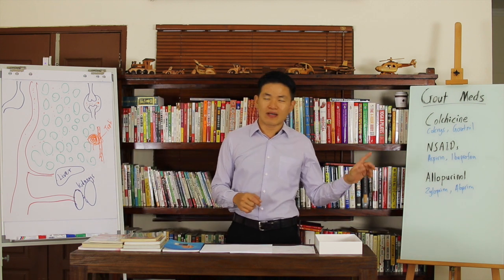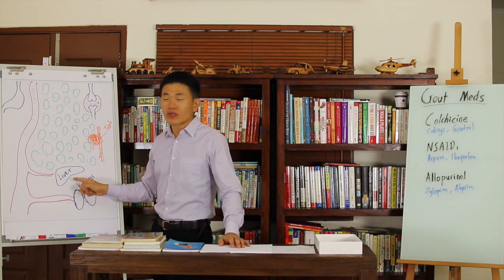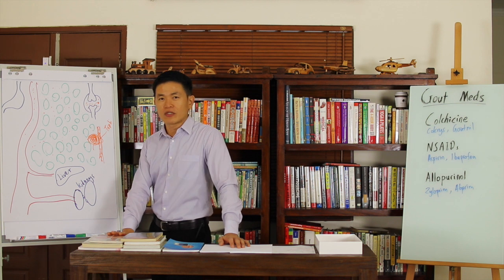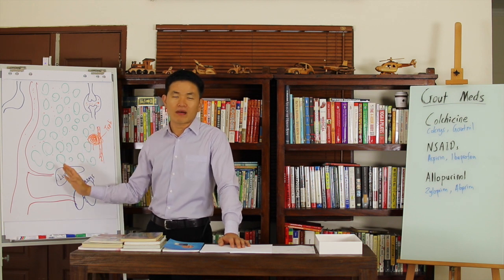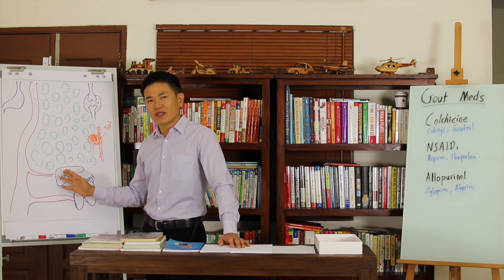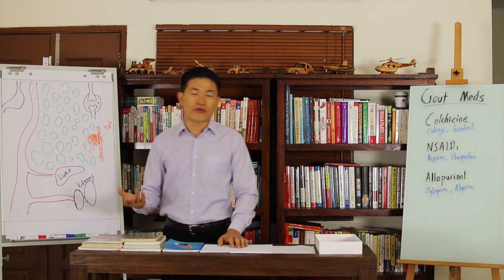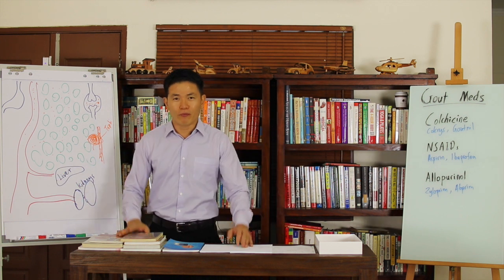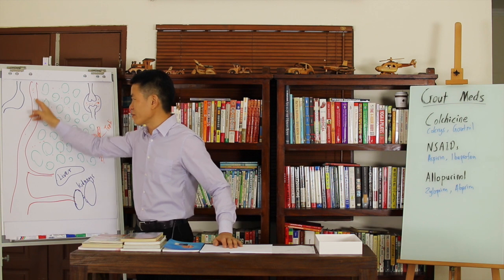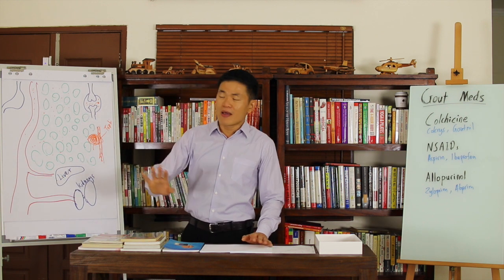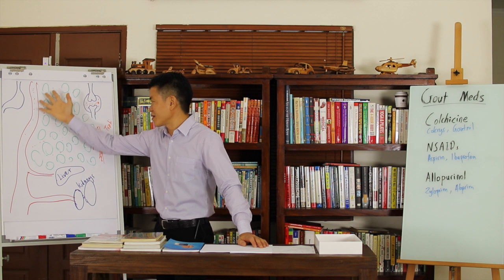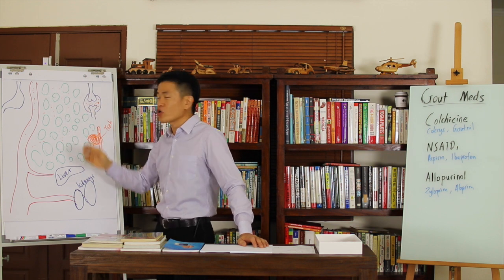What does allopurinol do is, it goes to the liver and it blocks this process. So by preventing the breaking down of purine, which means it reduces the production of uric acid into the bloodstream. With that, they lower down the uric acid in the blood, but it doesn't lower down the uric acid in the interstitial fluid and in the joint.